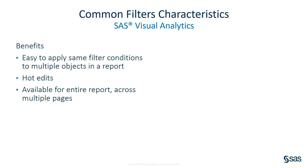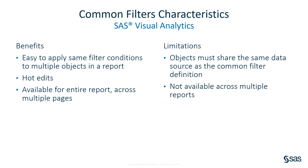Let's clearly identify the benefits. It is easy to apply the same filter conditions to multiple objects in a report. It is a hot edit, which means any changes or updates to the filter condition will be applied to every use of the filter. The common filter is available for the entire report across multiple pages. For limitations: objects must share the same data source as the common filter definition, and the common filter is not available across multiple reports.